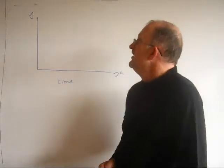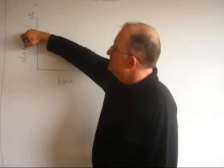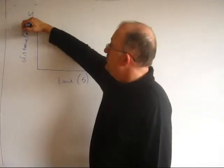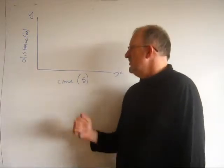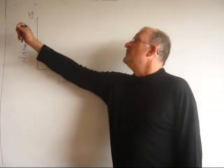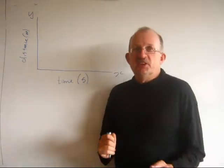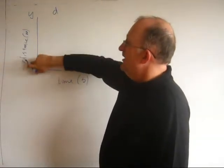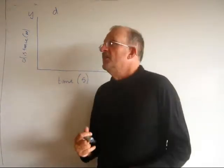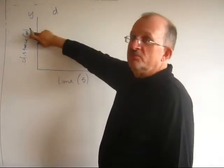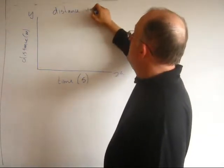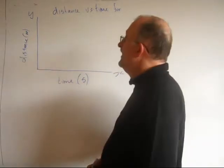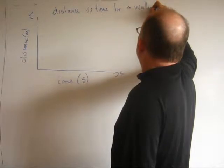Time goes along the bottom about 90% of the time. Up here we're going to be putting distance. These labels also have to have units. So we're going to use the basic units — time is going to be measured in seconds, distance is going to be measured in meters. Every graph should have a title, so it's the up-axis versus the across-axis for something. So it's going to be distance versus time for a walking lecture.